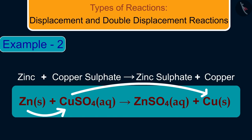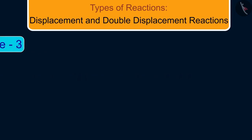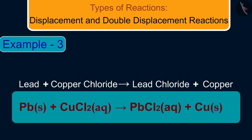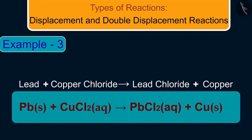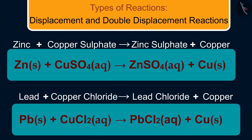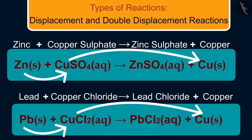Other examples of displacement reactions are: first, zinc reacts with copper sulfate and displaces copper to form zinc sulfate and copper. Next, lead reacts with copper chloride and displaces copper to form lead chloride and copper. Zinc and lead are more reactive elements than copper and therefore displace copper from its compounds.